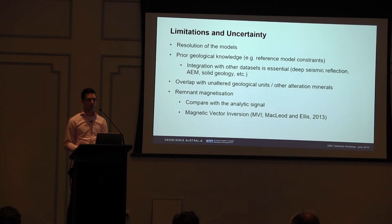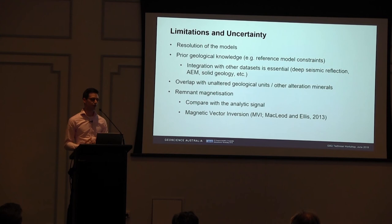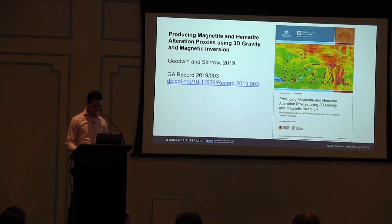Remnant magnetisation is always a problem when dealing with magnetic data. Two techniques to combat that are: first, to look at the analytical signal of the magnetic data set, since in 3D inversion you will get false anomalies — proxies appearing where they don't exist in reality; and second, to try a completely different inversion technique called magnetic vector inversion, which deals quite well with remnant magnetisation bodies.